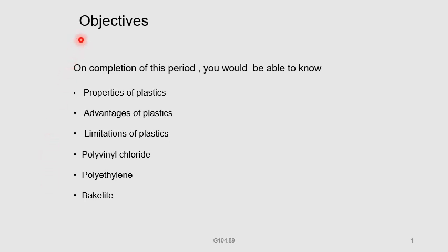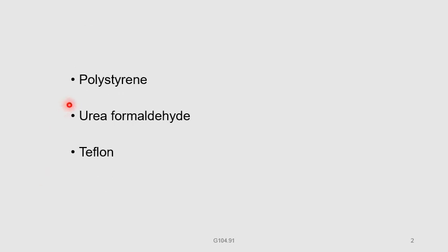What are the objectives of this video lesson? On completion of this period, you would be able to know properties of plastics, advantages of plastics, limitations of plastics, and the preparation and uses of polyvinyl chloride (PVC), polyethylene, bakelite, polystyrene, urea formaldehyde, and teflon.